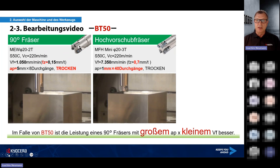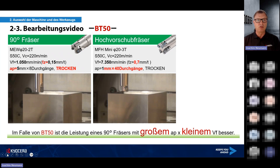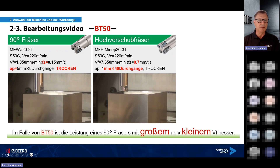Schauen wir uns das Ganze videogestützt an. Links sehen wir den MEW Durchmesser 20, 2 Schneiden, Tischvorschub etwas über 1 Meter, Vorschub pro Zahn 0,15, AP 5 mm – entspricht 8 Durchgängen. Rechts sehen wir den Hochvorschubfräser MFA Mini: Tischvorschub 7.150 mm/min, Vorschub 0,7 mm pro Zahn, Zustelltiefe 1 mm – entspricht 40 Durchgängen.